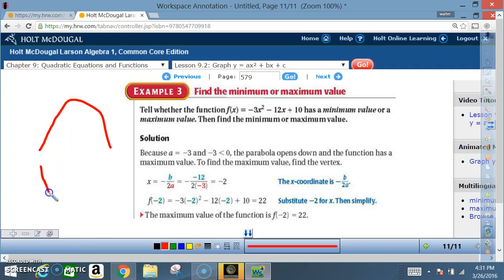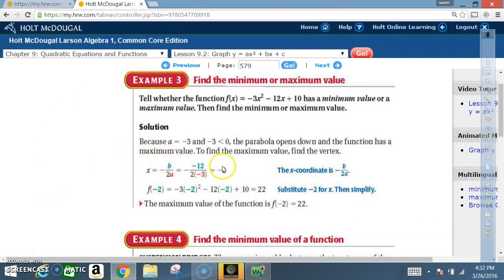Had it opened upward, it would have this shape, same U shape, but the value, the vertex, would have been a minimum value.